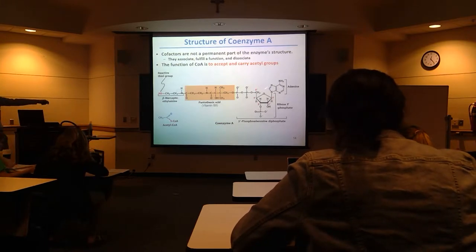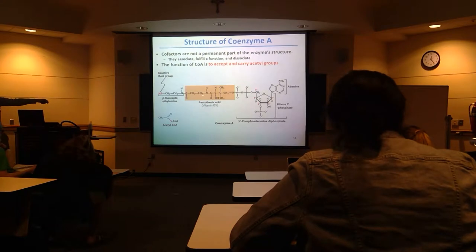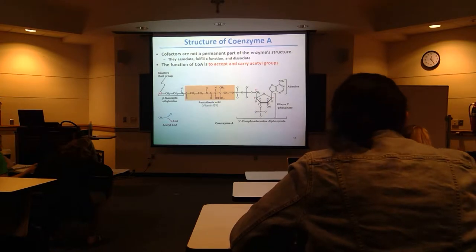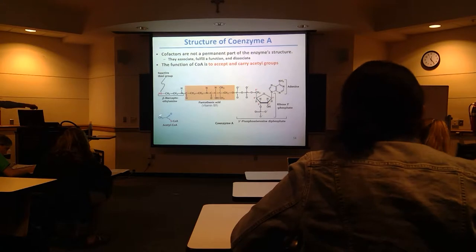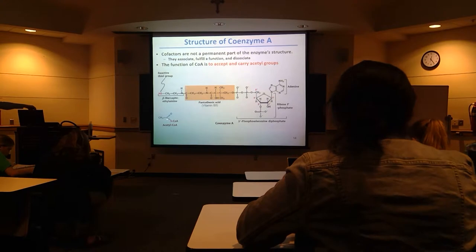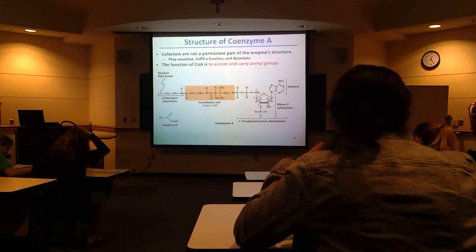Coenzyme A has basically an adenine base, ribose with a phosphate on it, linked through a derivative of vitamin B5 to the very end of the reactive thiol group. So this thiol group — SH here — is going to be what covalently attaches to things to make, for example, acetyl-CoA. That would be how it's acceptable to indicate this whole structure: the acetyl group with S-CoA. If it's just coenzyme A not attached to anything, it would be CoA-SH.